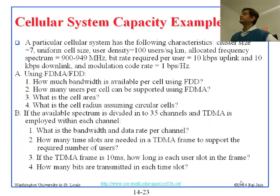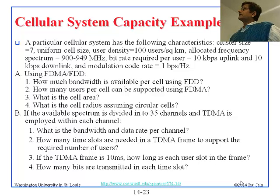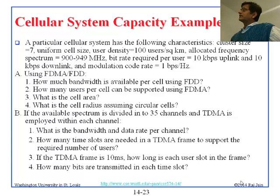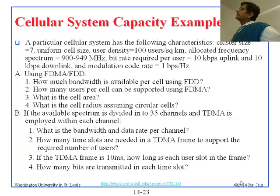Now let's do some calculations. A particular cellular system has the following characteristics: cluster size is 7, user density is 100 users per square kilometer, bit rate required is 10 kilobits uplink and 10 kilobits downlink, and the modulation rate is 1 bit per hertz. Just like we got 1.3 from GSM, before GSM was designed this is the kind of calculation they had to do — and also for deployment. The question is: how much bandwidth is available per cell using FDD?